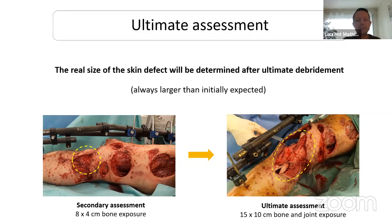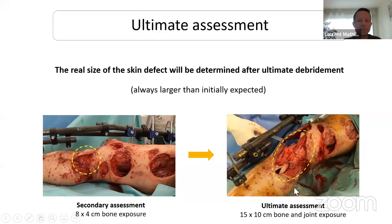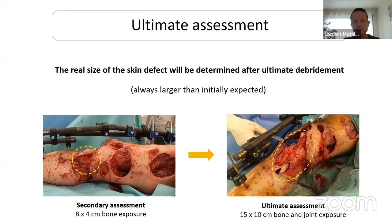A typical example: a land mine victim. On the first day we had an exposure of 8 by 4 centimeters. After a few days of serial debridement, this became a 15 by 10 centimeter soft tissue defect with large bone exposure. Always remember that the skin defect is always larger than you initially think.